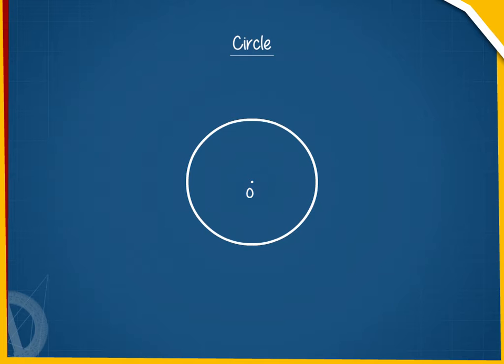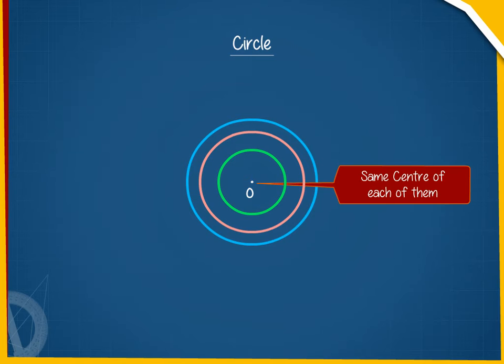Now, we arrange rings of varying sizes inside one another. Each fits uniformly inside the other. This means each one of them has the same center.